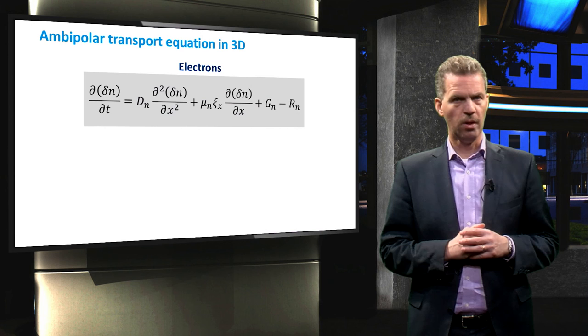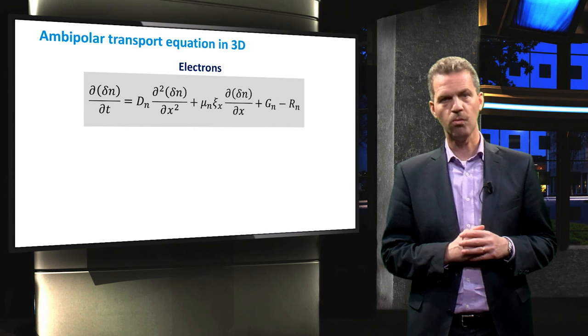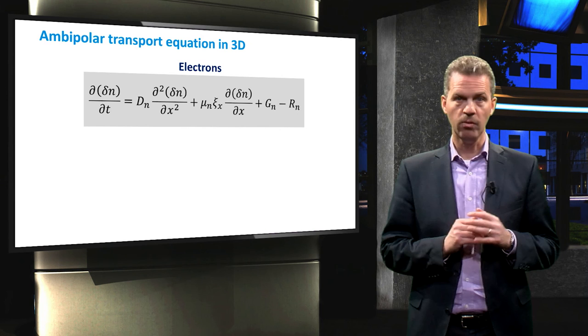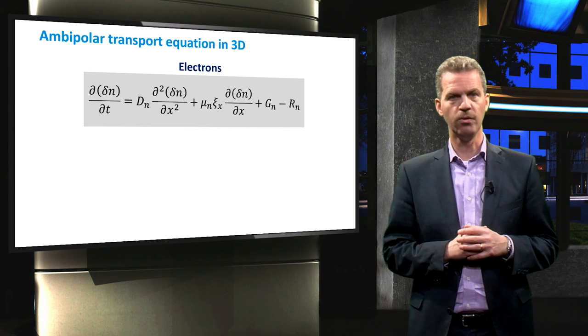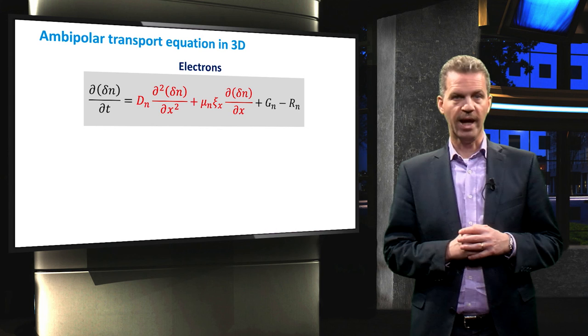Now that we have gone through an example in one dimension, we can expand the ambipolar transport equation to three dimensions. Let's start with the equation for electrons. The only terms which are related to the dimensions of the control volume are the diffusion and drift terms, which show a dependence on x.